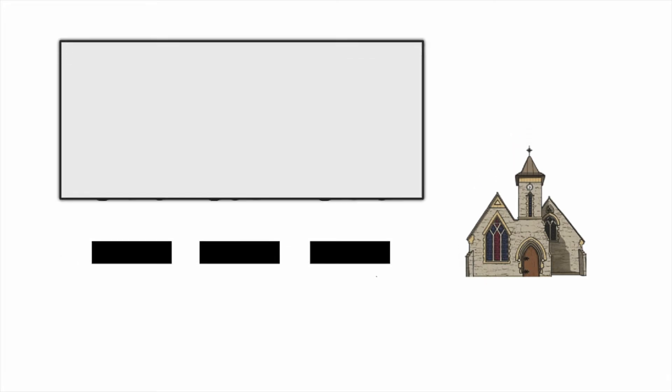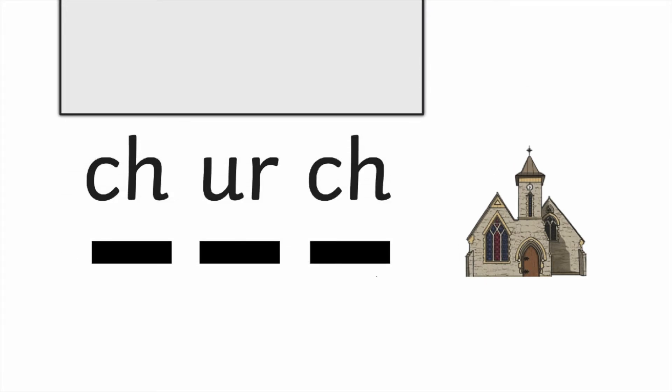That's right, it's a church. Do you know what's special about the word church? It's got two graphemes that are exactly the same. I'll show you: we've got 'ch' at the beginning, 'ch' at the end, and there is our new digraph 'ur' in the middle. Blend with me: Ch - ur - ch. Church. Six letters but only three phonemes, only three sounds.